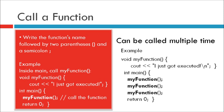A function can be called multiple times. For example: void myFunction() { cout << "I just got executed"; }. In the main function, we call myFunction three times: myFunction(); myFunction(); myFunction(); return 0;. Now the output of this program is: I just got executed, I just got executed, I just got executed.